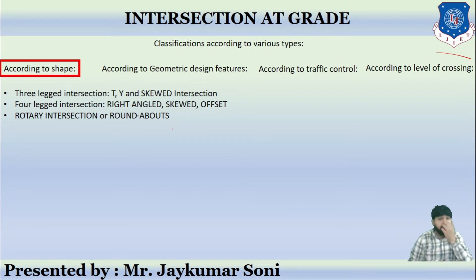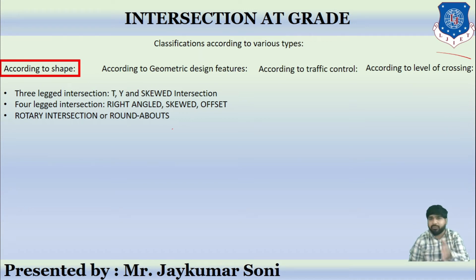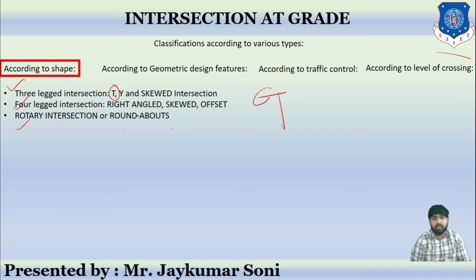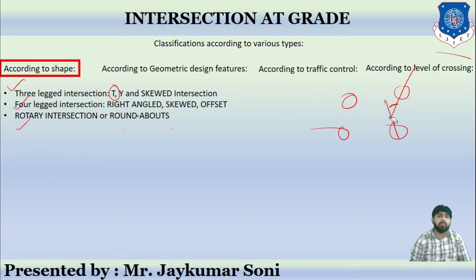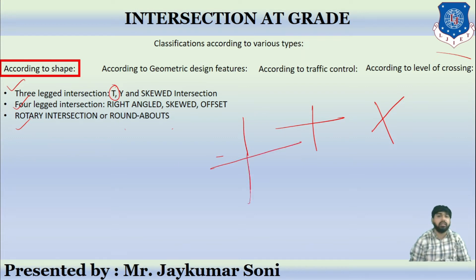To summarize classification by shape: it will be three-leg, four-leg, or rotary. Three-leg can be T — one, two, and three legs — then Y shape, and then skewed, which makes a certain angle. Four-leg can be right angle — complete 90 degrees — skewed, or offset. And then comes the rotary intersection or roundabout.